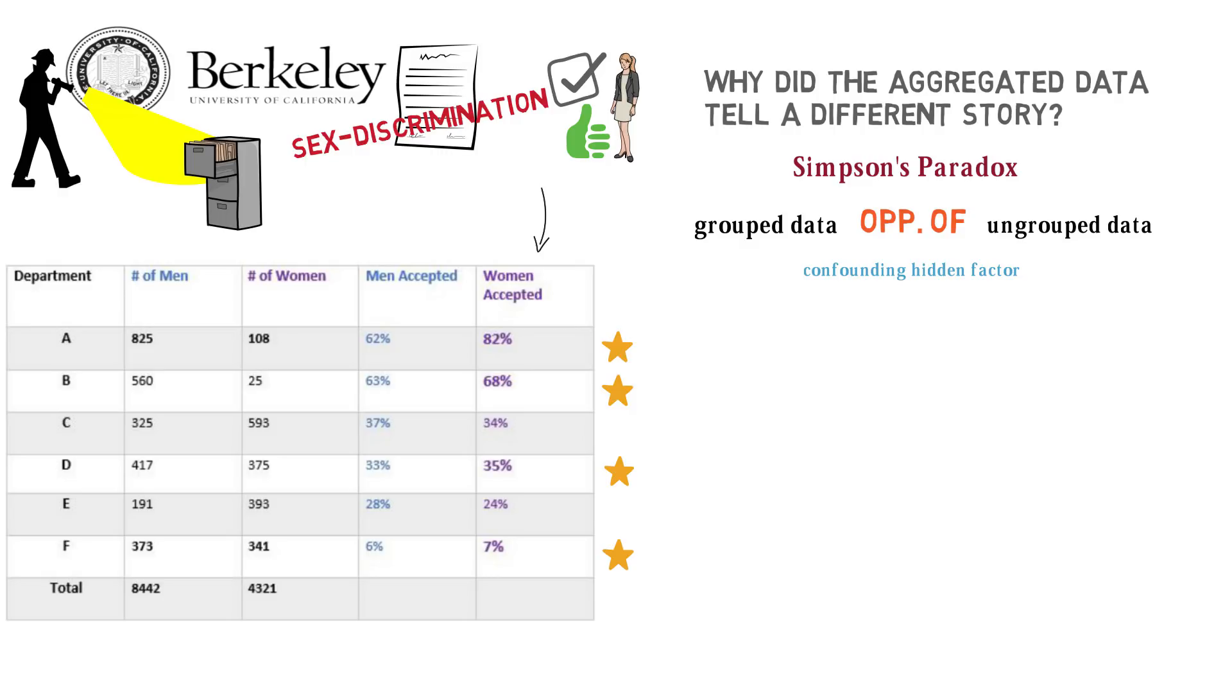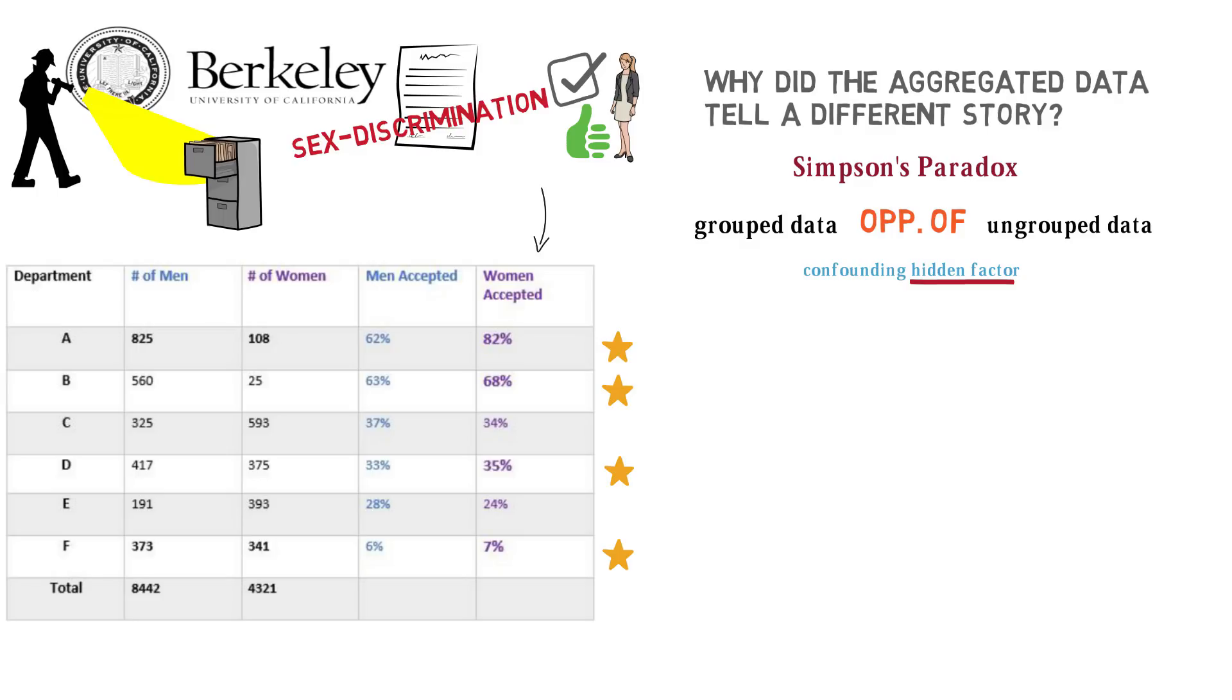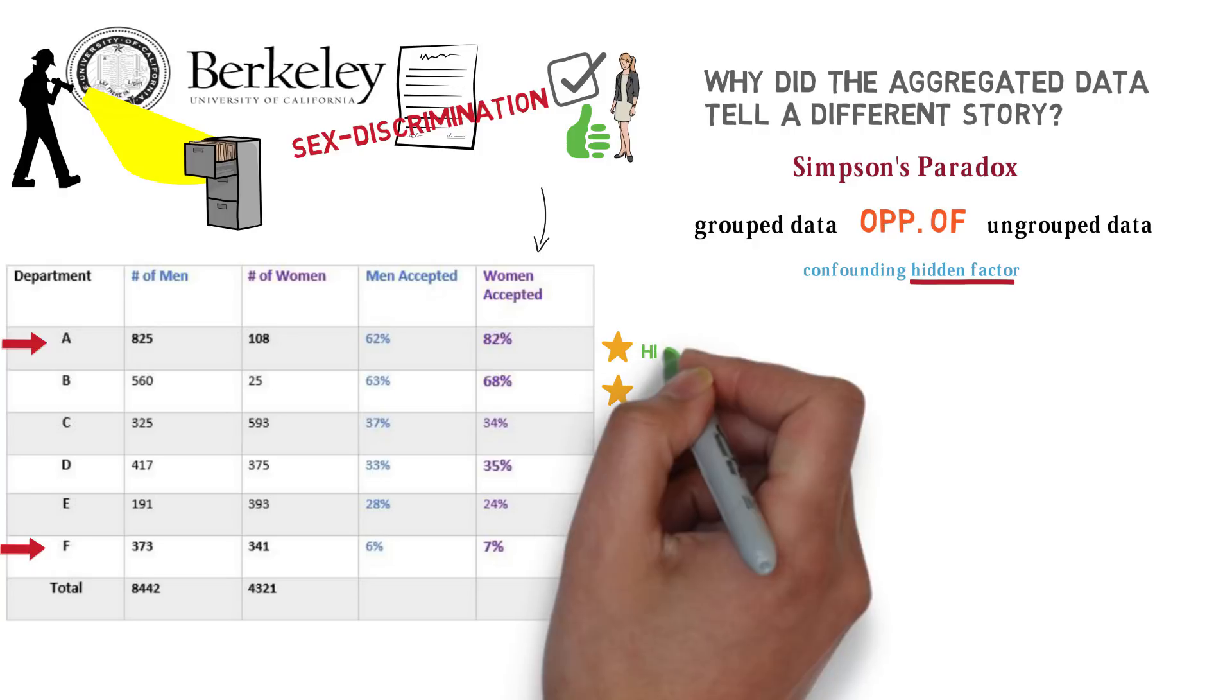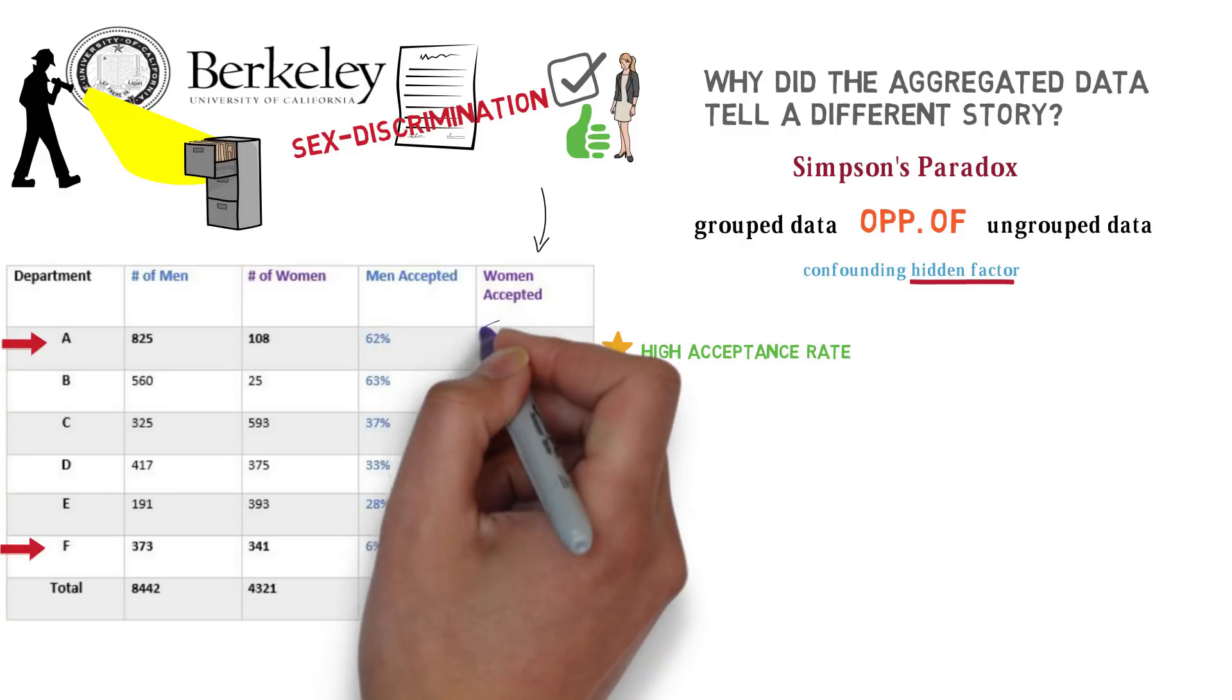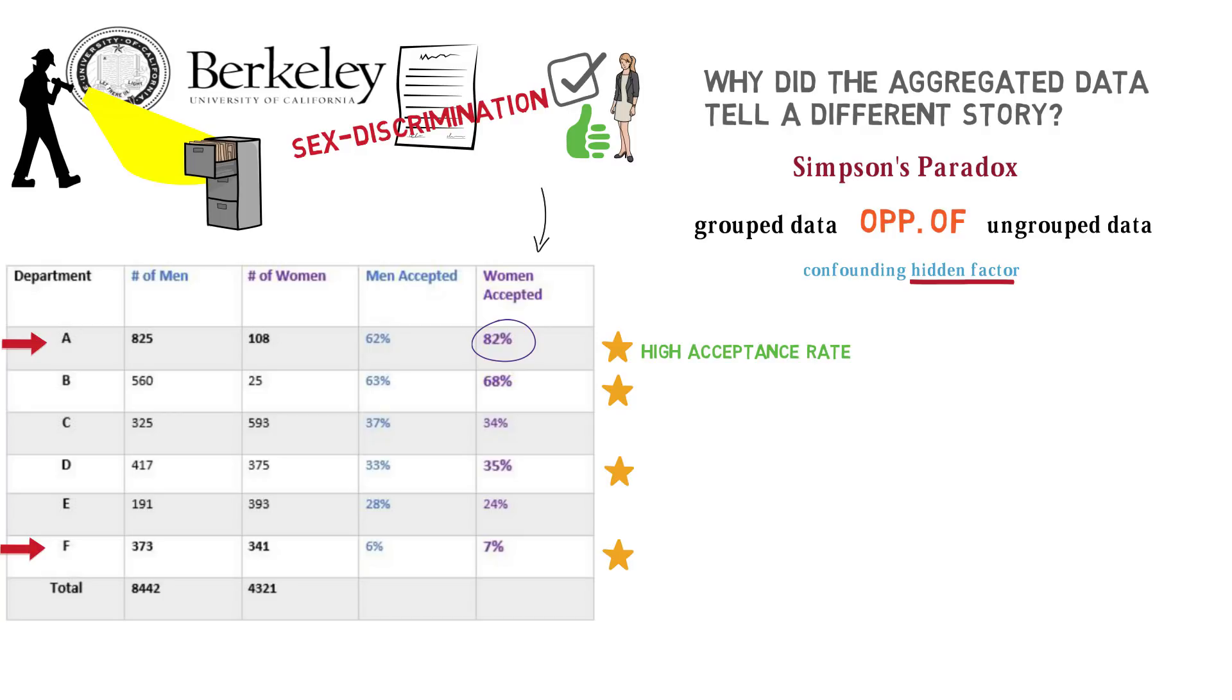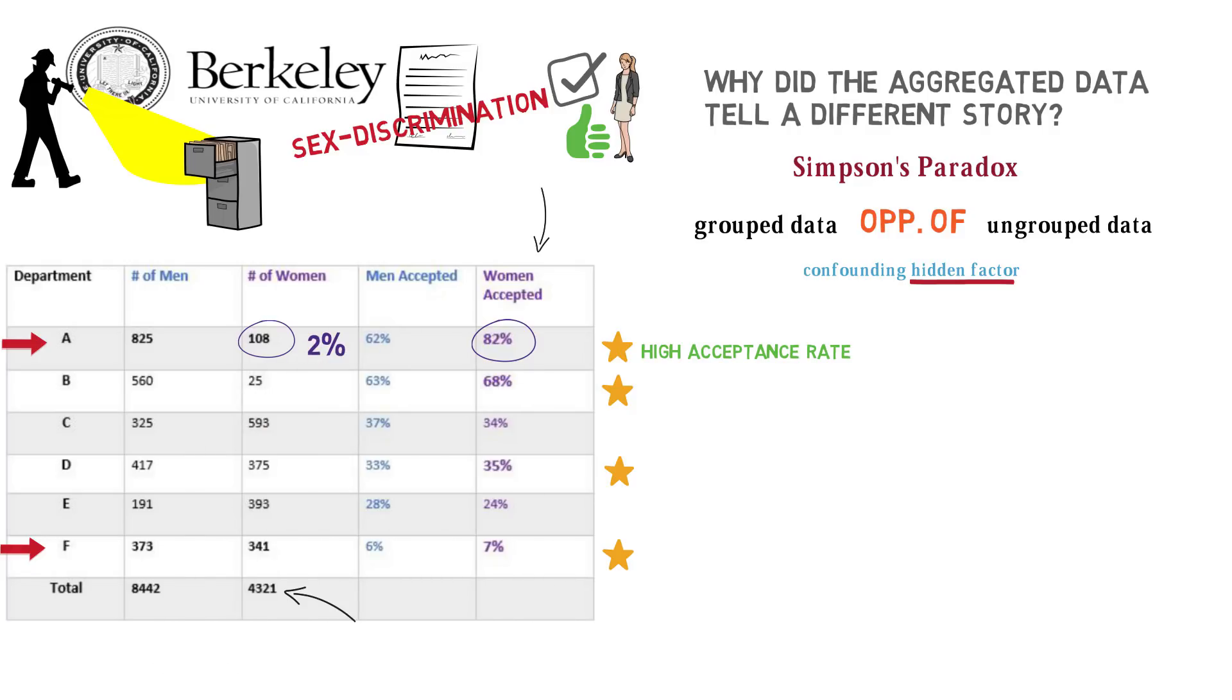So what's this hidden factor that's causing all this mischief? Take a look at the first row and the last row of the table. You'll notice that Department A has a pretty high acceptance rate, especially for women, sitting at 82%. However, out of the 4,000-plus women, only 108 of them applied to this department—that's only 2% of all women who applied across departments.